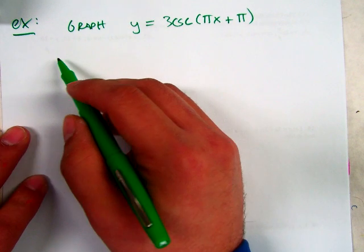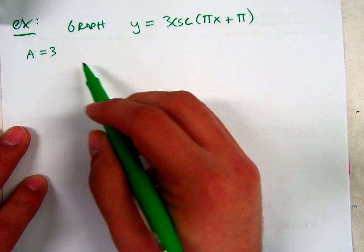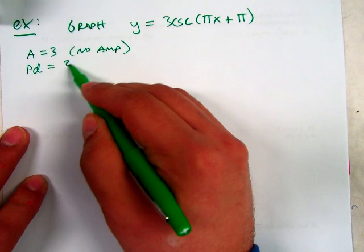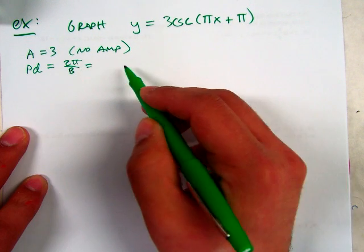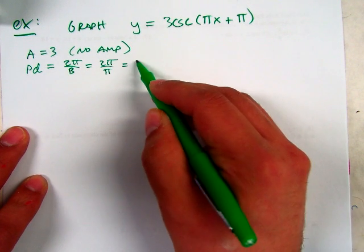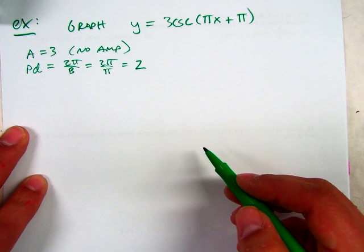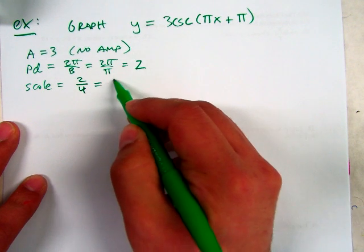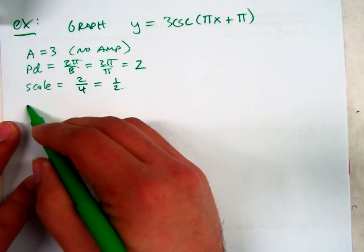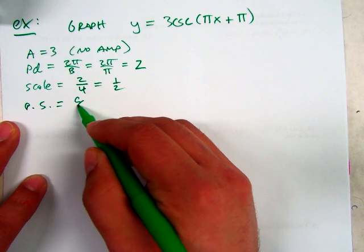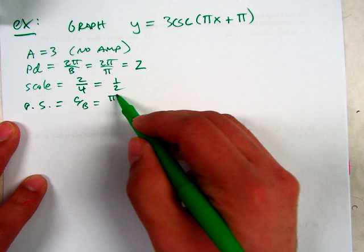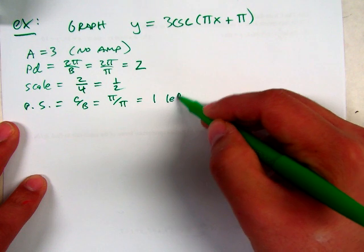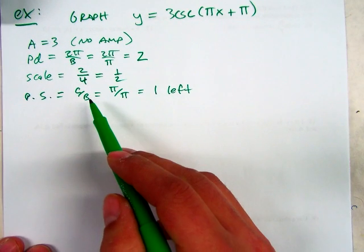For sine, we know a is 3, but there's no amplitude for the cosecant. The period is 2 pi divided by b, which in this case is 2 pi over pi, so the period is 2. Everybody good? What scale should I use if the period is 2? Divide it into 4, so 1 half. Good. Is there a phase shift? Phase shift is c over b, so we're going to say pi divided by pi, which is 1, and if we're adding, what direction is this? Left. Left. Very good. So these are the details for the sine graph.